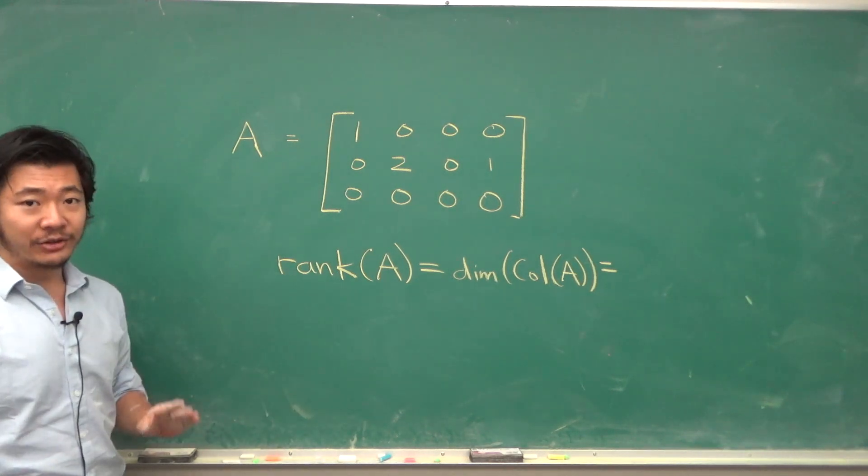In a previous video we discussed how to find the basis of a column space. It boils down to just locating the pivot columns. So we have two pivot columns. This will form our basis, and so in this case the rank is 2.